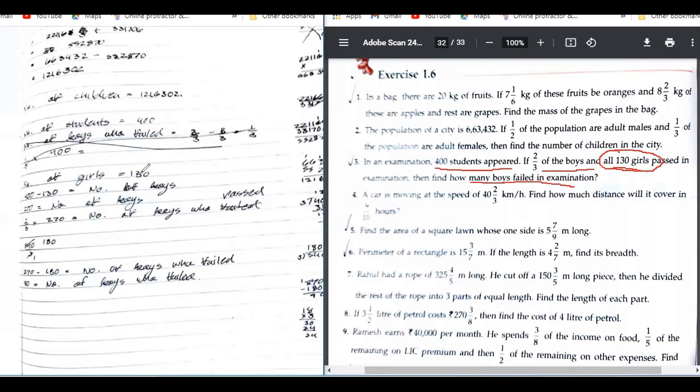Okay. Whatever. Number of girls, 130. What is this? Write it properly. 400 minus 130, number of boys, that is 270. Okay, fine.